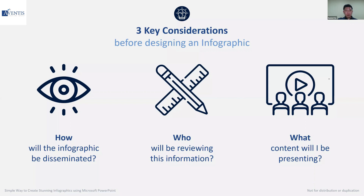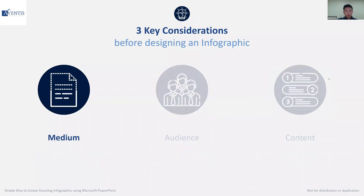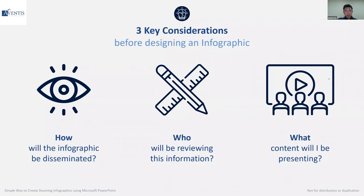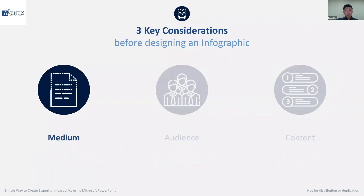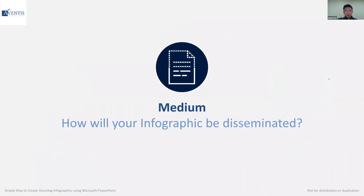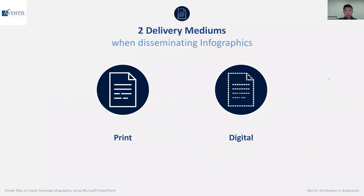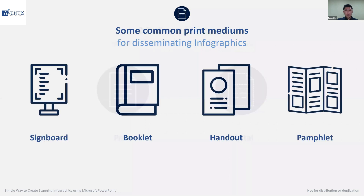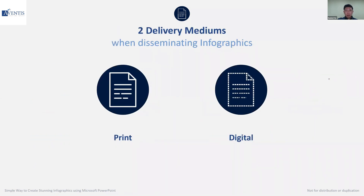Three key things you have to look at: how will the infographic be disseminated, who will be reviewing the information, and what content will you be presenting. We look at medium, audience, and content. Medium covers how your infographic will be disseminated — print and digital medium. Print means anything you create and then print out, maybe in the form of a flyer, booklet, or training materials. Digital includes things like EDMs, mailers, or even presentations.